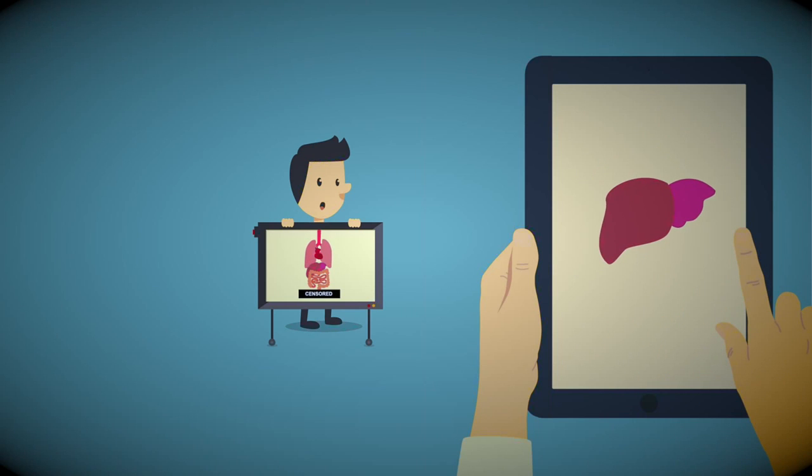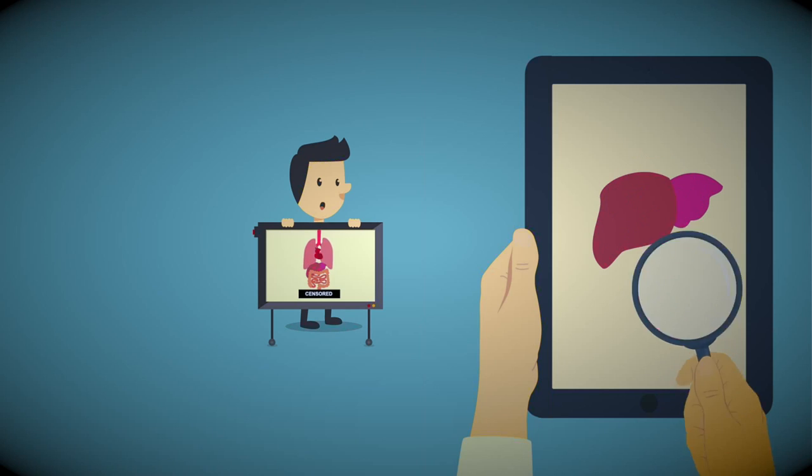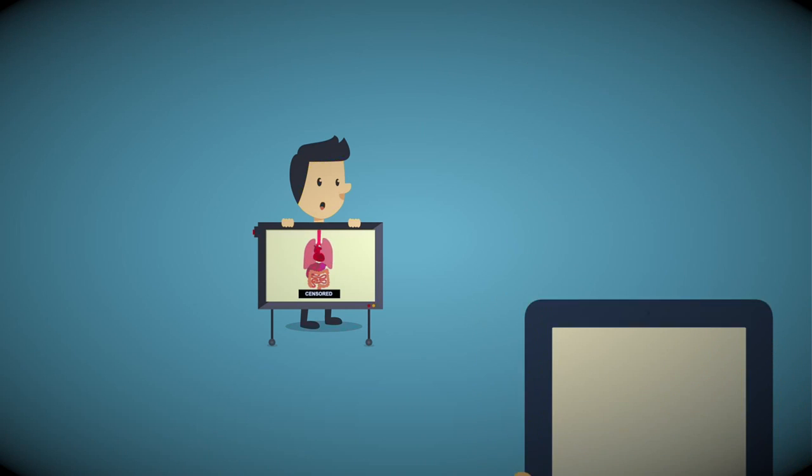The cholesterol circulating in your blood comes from two sources. Around 75% is produced naturally by the liver. The other 25% comes from food.